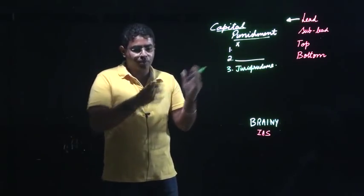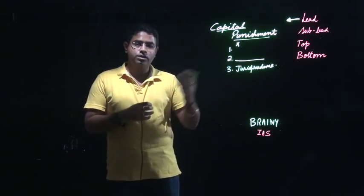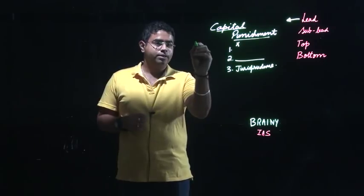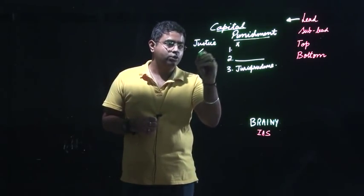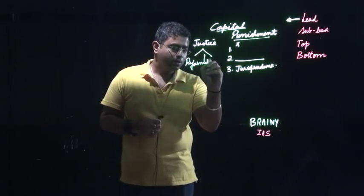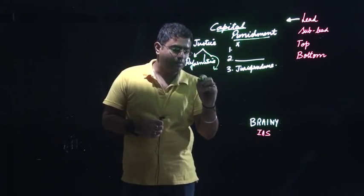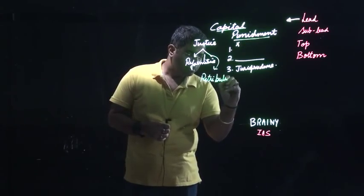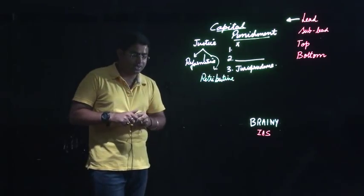There is another logic in jurisprudence which says capital punishment should be done away with. Jurisprudence is nothing but the theory of law. This theory talks about two things - the concept of justice is of two types: reformative justice and retributive justice.